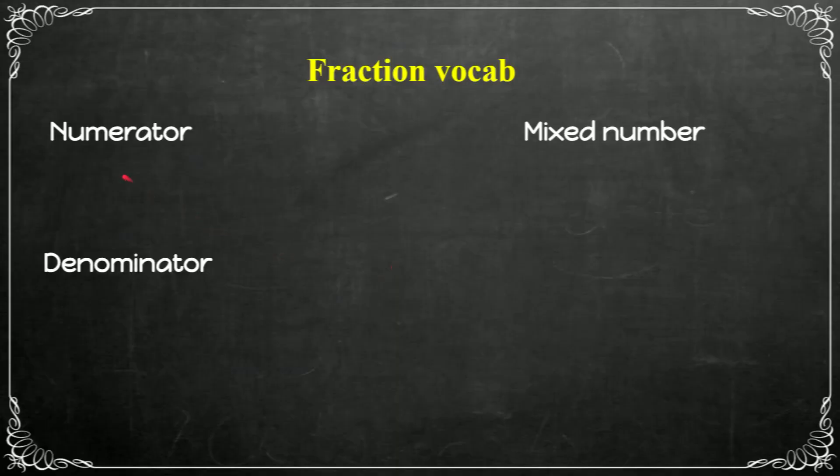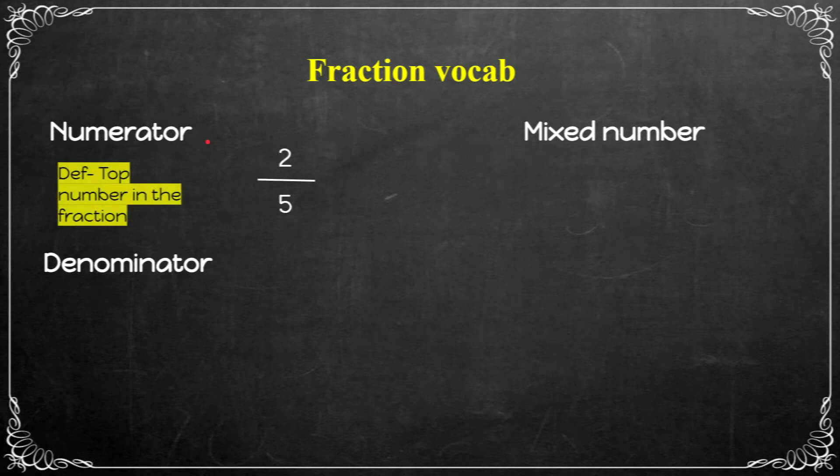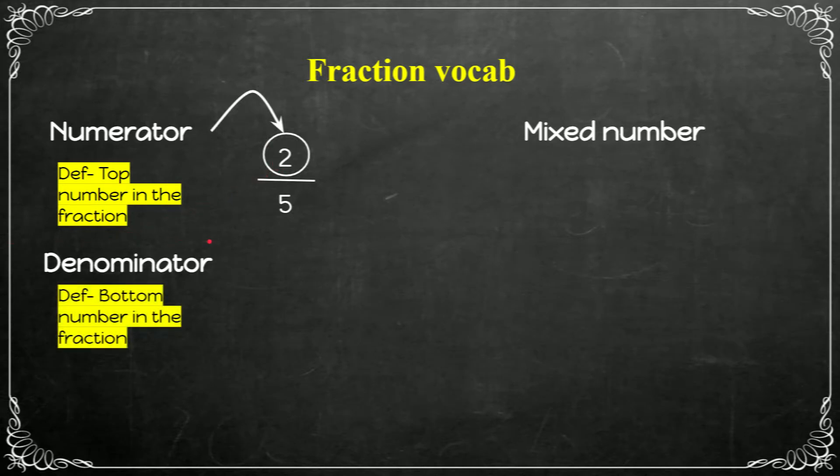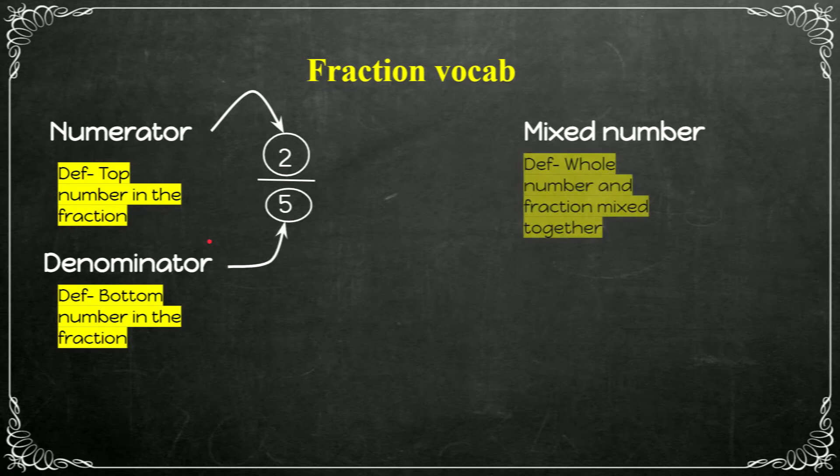So first, let's learn about numerator. Let's first draw our fraction. The numerator is the top number in the fraction. So the two is considered a numerator. And a denominator is the bottom number in the fraction. So the five is considered a denominator.